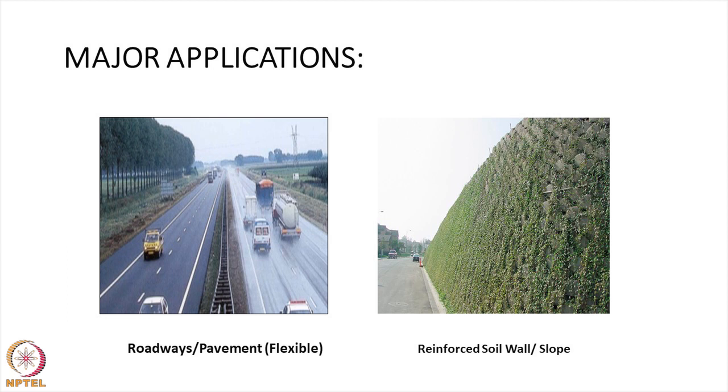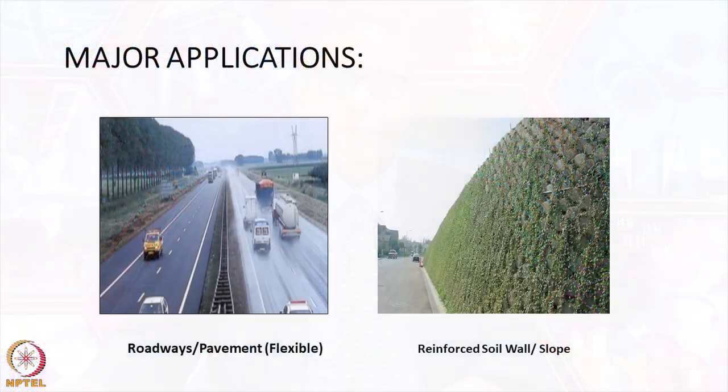There are major applications of geosynthetics material. This is the roadway or pavement as a flexible pavement — where there is reflection cracking, you can use geosynthetics material. You can use both geogrid and geotextile for the construction of the roadway. Even superlight geofoam material can be used for the construction of embankments on soft soil. This is the reinforced soil retaining wall or slope — you can make use of geogrid and geotextile material for the construction of reinforced soil walls and slopes.